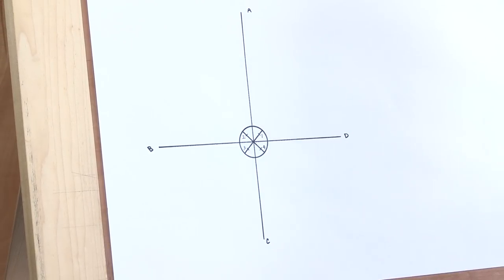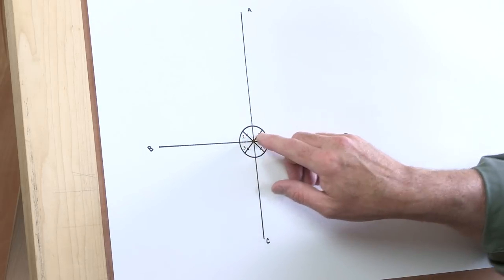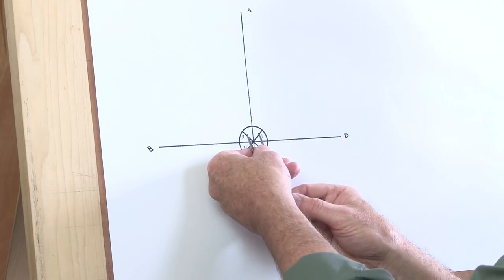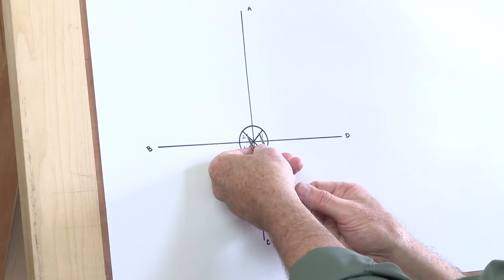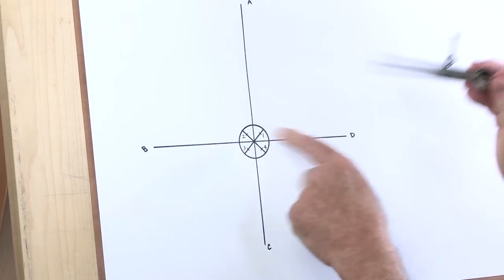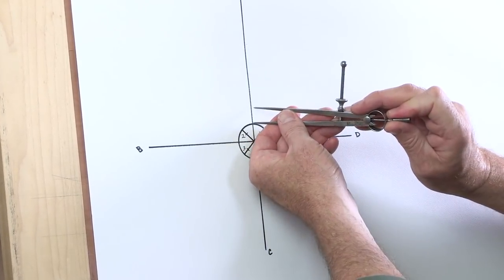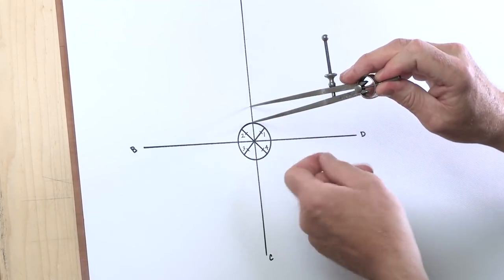To start to draw a volute, once I have these reference points on the diagonals, I take a pair of dividers and set them to that width. Then I come to the top of my eye and step up six times.